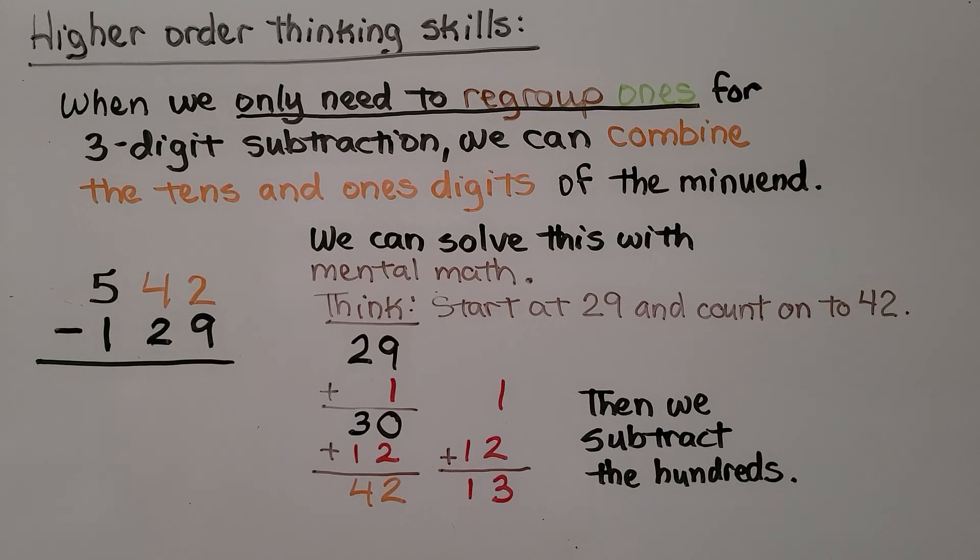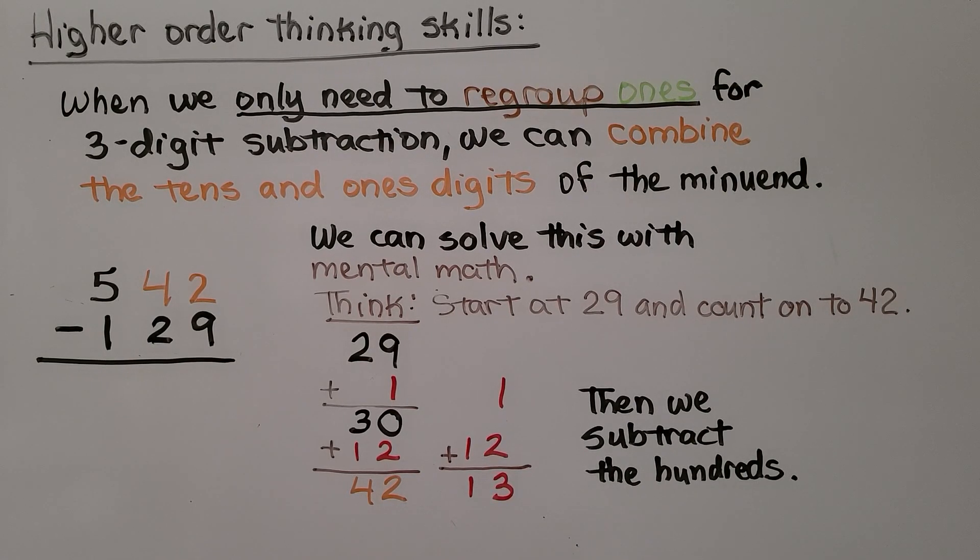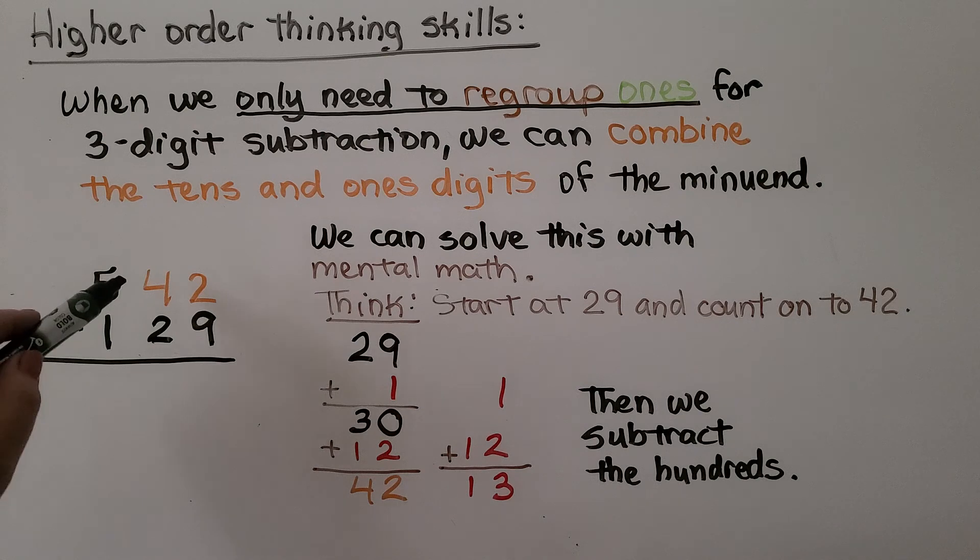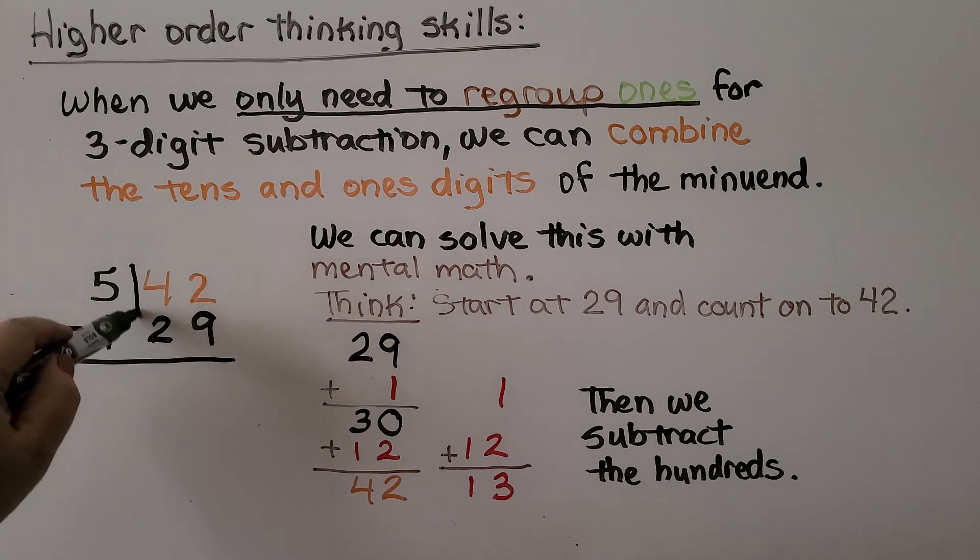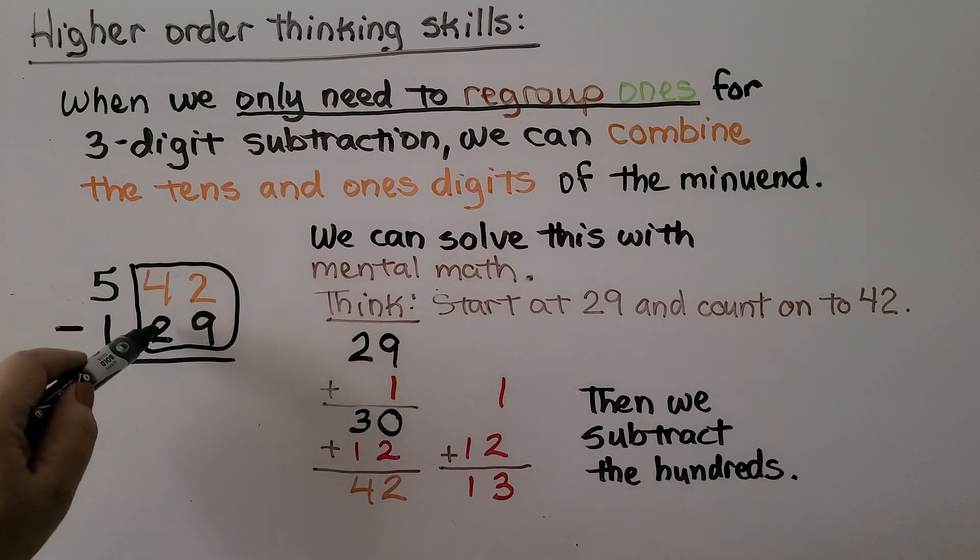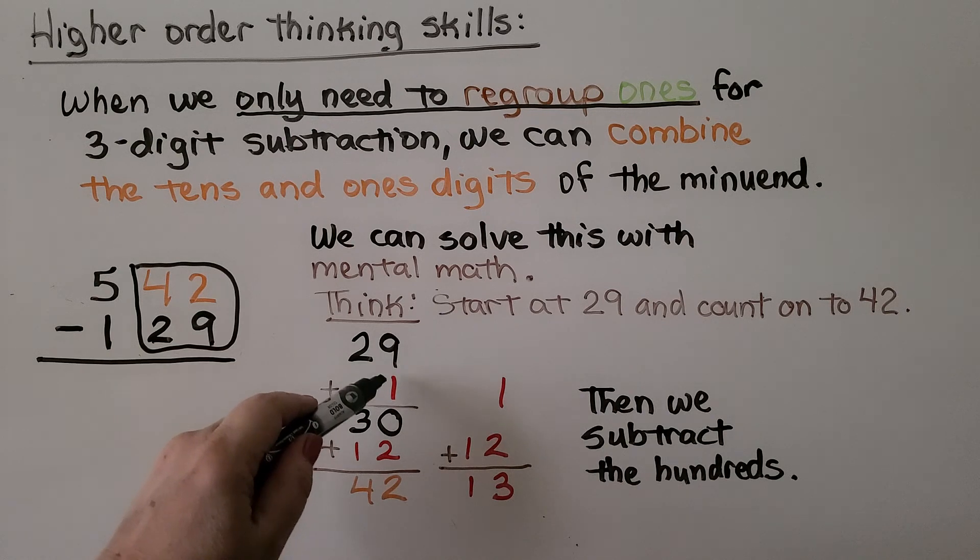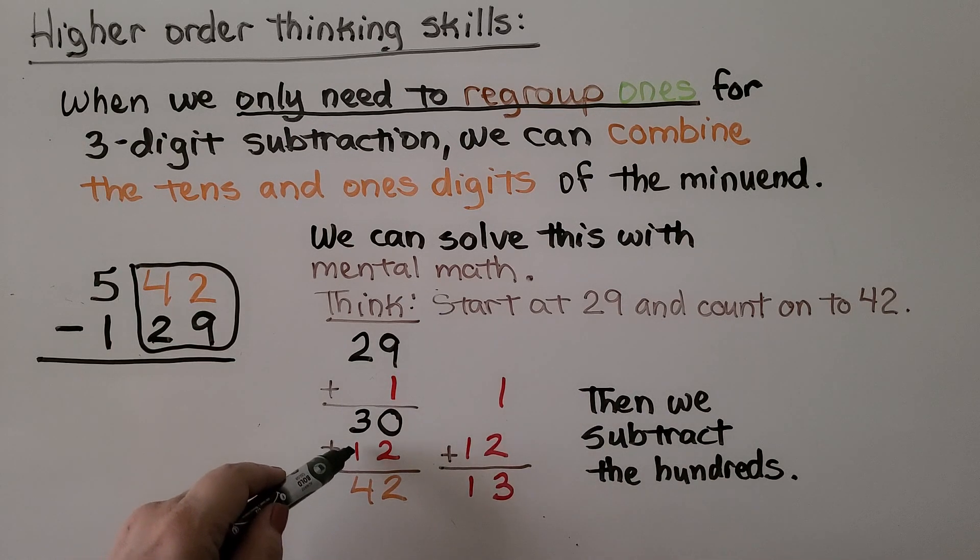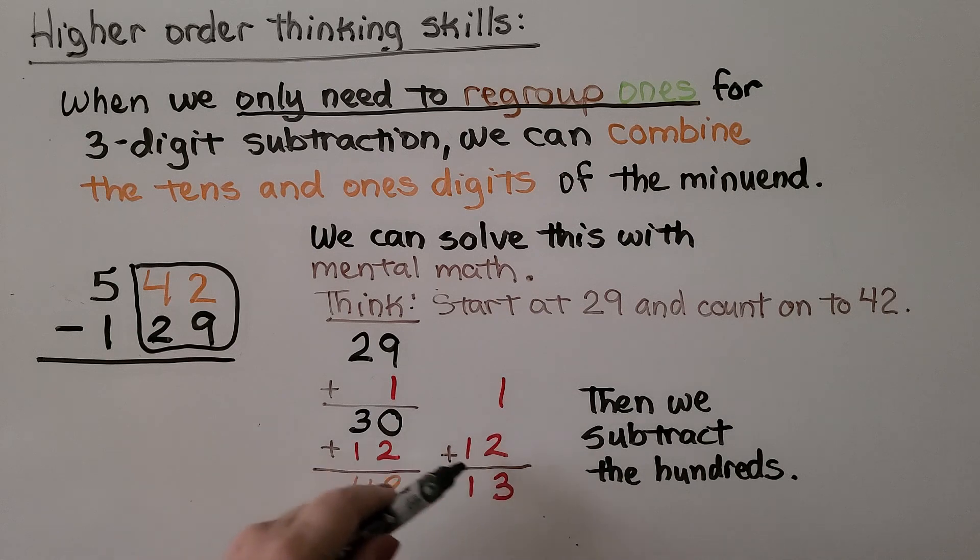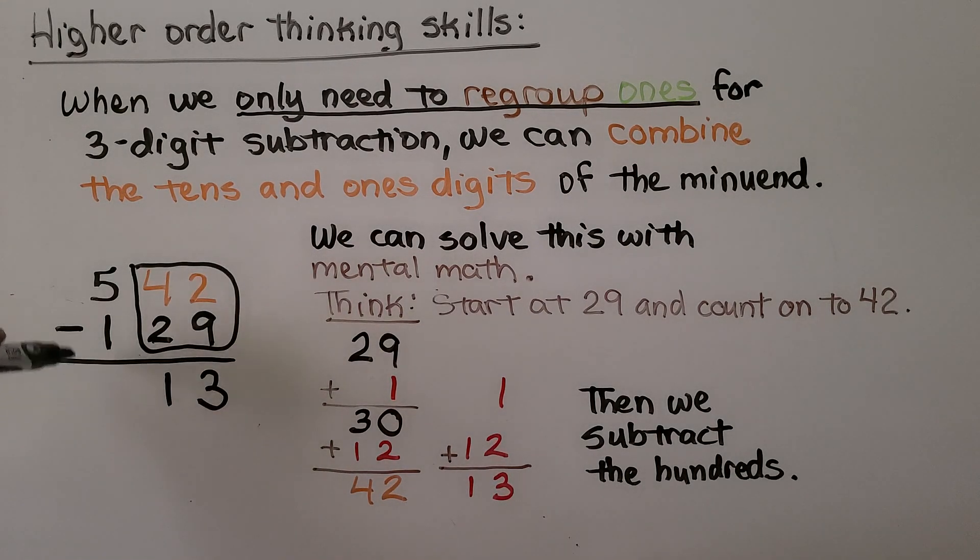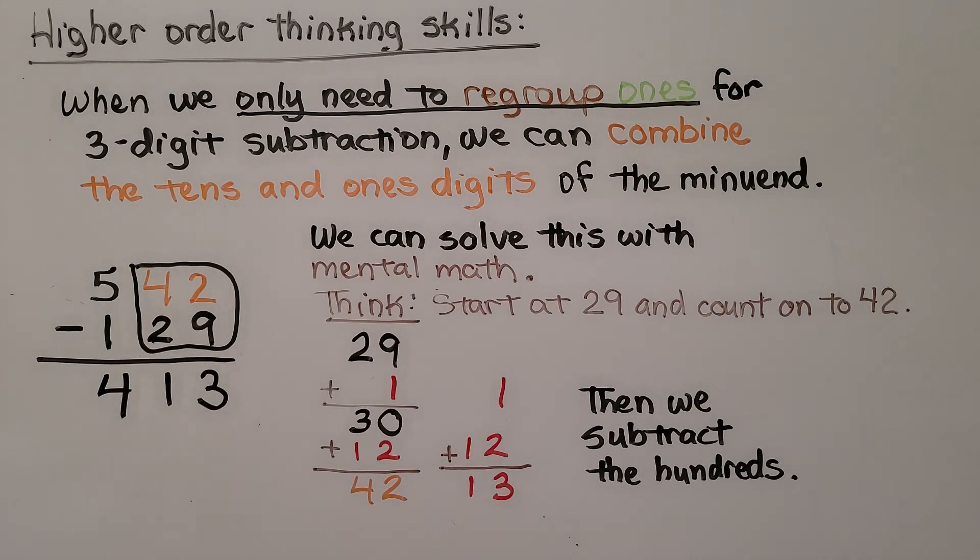When we only need to regroup ones for three-digit subtraction, we can combine the tens and ones digits of the minuend. We could actually solve this with mental math. We look at this as 42 minus 29. For 29, if we count on one more, we'll be at 30. So now we've counted on one. And if we add 12 more to 30, we'll be at 42. 1 plus 12 is 13. This must be 13. Now we just subtract the hundreds. 500 minus 100 is 400. We know the difference is 413.